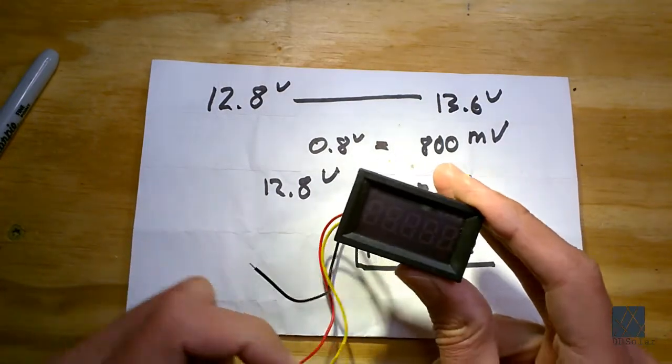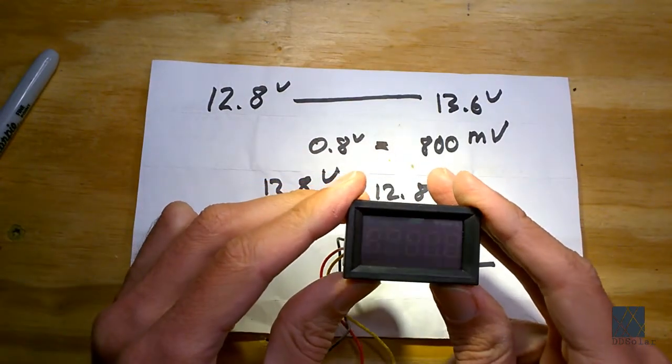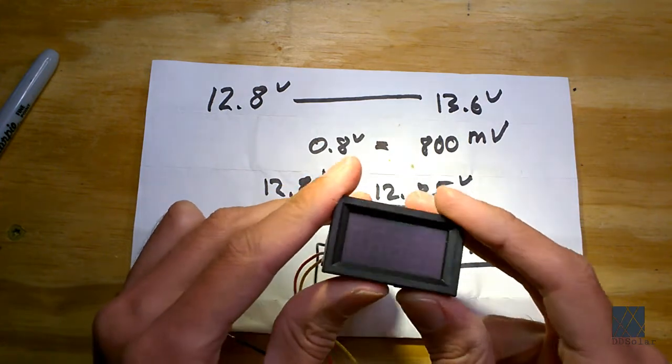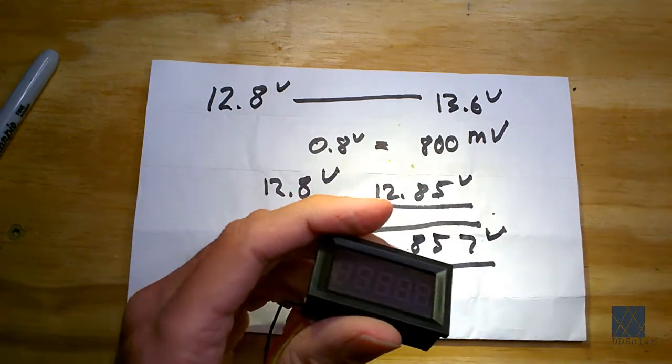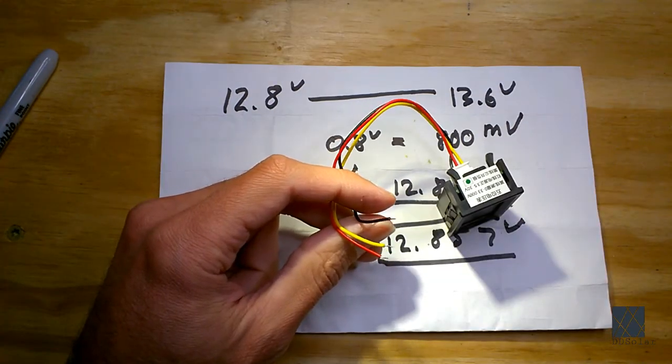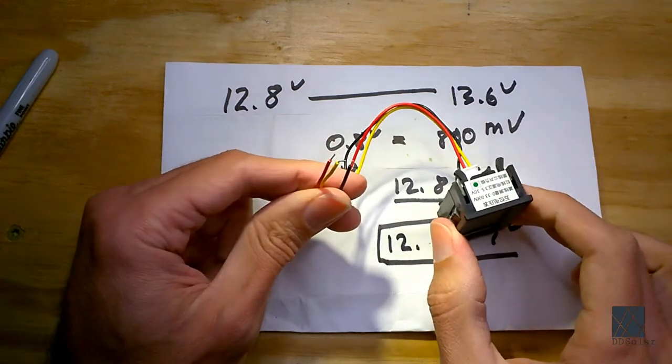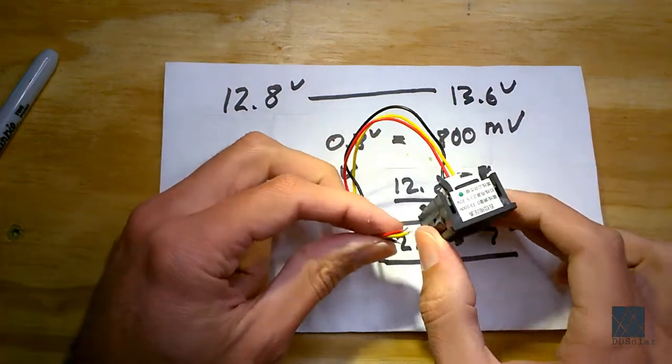Now that could affect its accuracy but with a meter like this that's well calibrated it should not be a problem. I'm going to use relatively short wires to connect this voltmeter so I don't think powering it from the battery I'm measuring will be an issue.